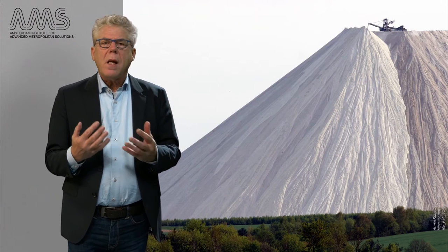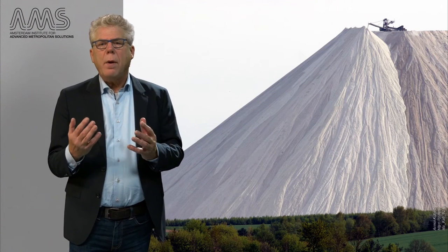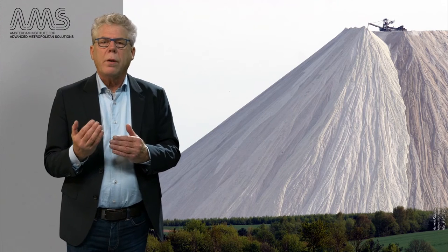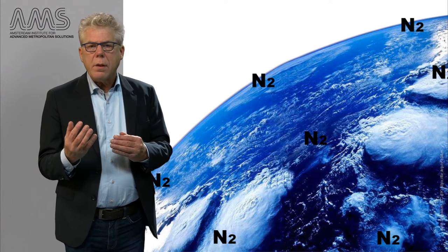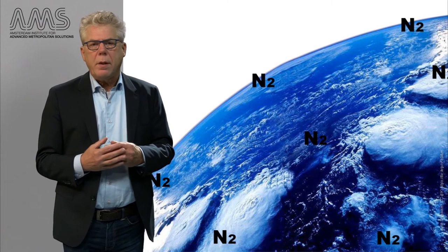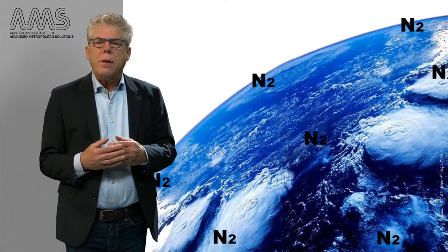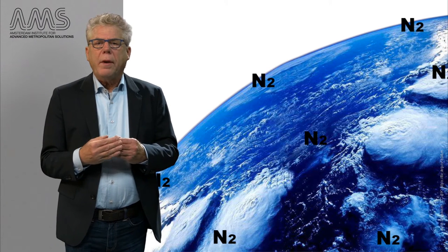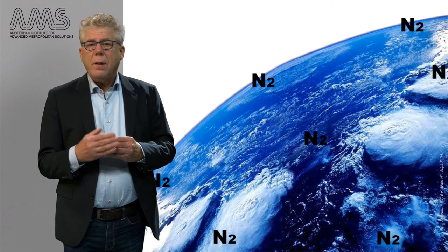For potassium this is not so much of a problem, as it is abundant in the earth's crust. Similarly, nitrogen is abundant in the atmosphere and can be fixed from the air via natural processes or through man-made technologies, also known as the Haber-Bosch process. This chemical process produces nitrogen fertilizers from atmospheric nitrogen, which is then applied to agricultural land, but it requires a lot of energy and fossil fuels.